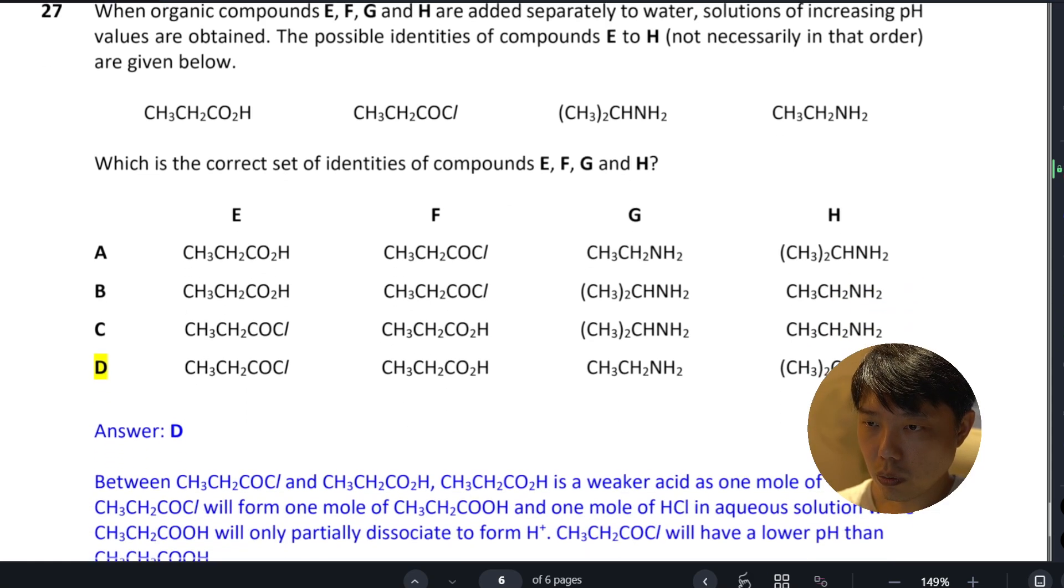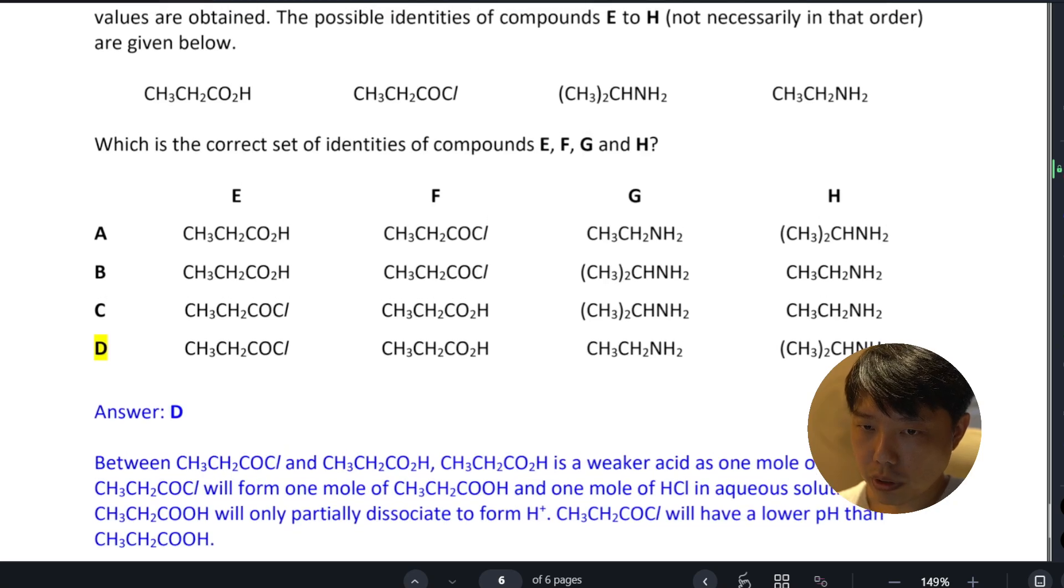At the start, you want to put the most acidic - the acyl chloride - because it will hydrolyze to become HCl and ethanoic acid... no, propanoic acid. So acyl chloride should be first with the lowest pH.